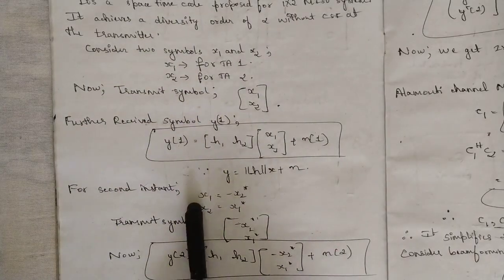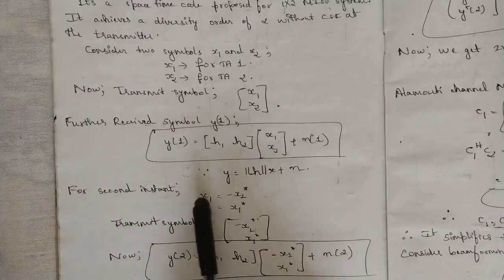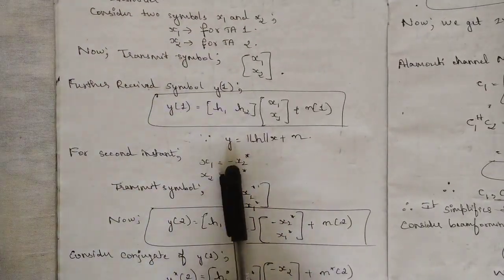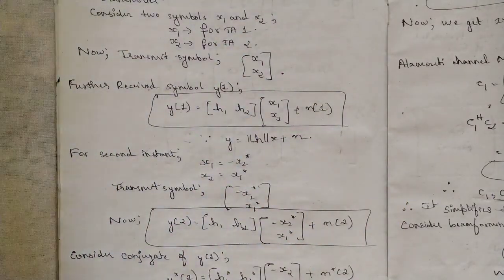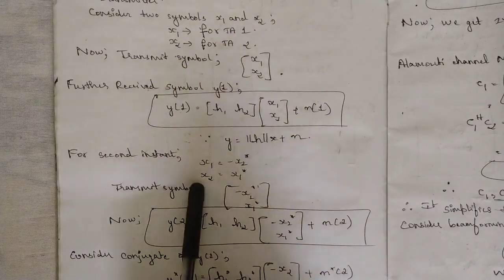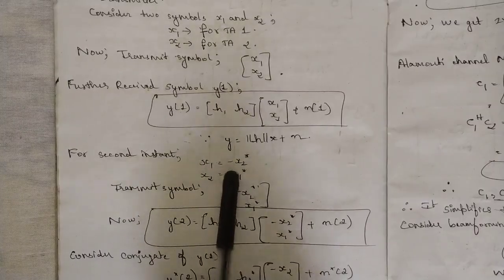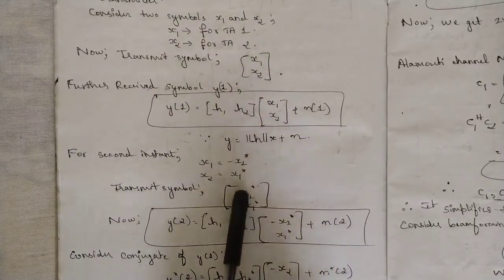For the second instant, consider the value of X one equal to minus X two conjugate. These values need to be remembered - they are fixed. Under the Alamouti code, for the second instant, with respect to the second part of the symbol you need to change the polarity so that the signal gets interchanged. Because while it travels from transmitter to receiver there is one shift in the signal. With respect to two different symbols, the polarities also change with respect to their conjugate. If X one equals minus X two conjugate, then X two equals X one conjugate.